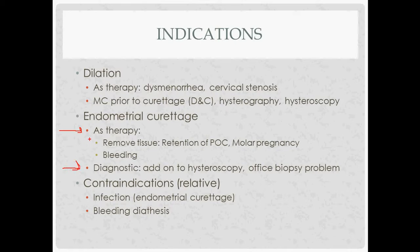As a therapy, you can use curettage to remove tissue — that would be a retained product of conception or a molar pregnancy. You can also use it as a treatment for bleeding. If somebody has prolonged heavy bleeding and they're not doing well hemodynamically, endometrial curettage is a good therapy. If retained products of conception are causing bleeding, curettage is what you'd want to do to correct that.